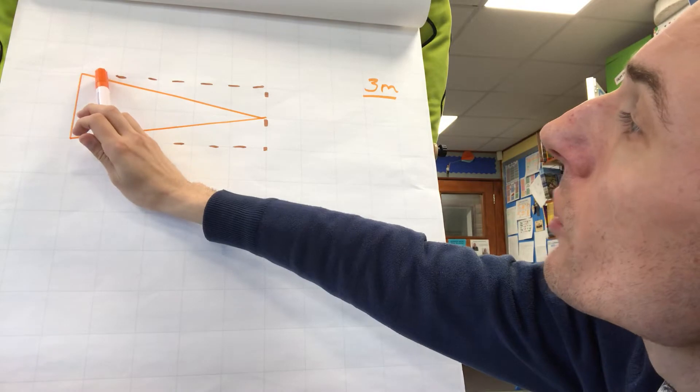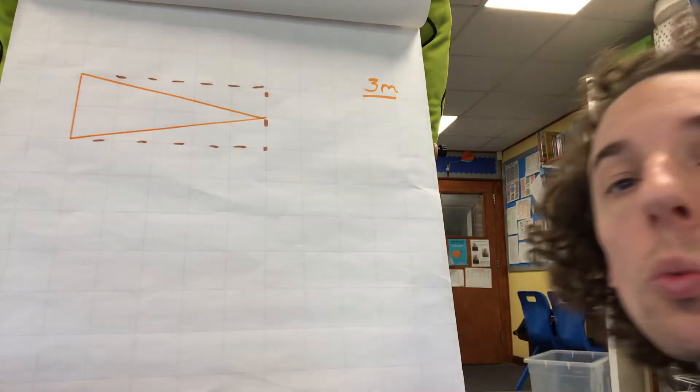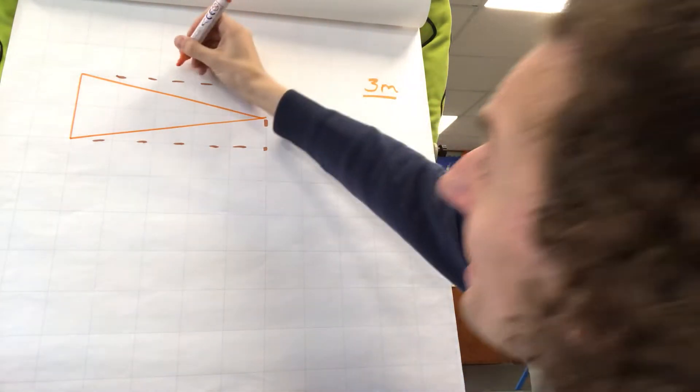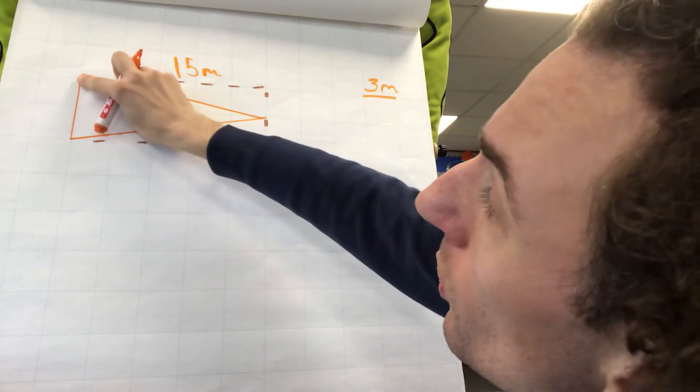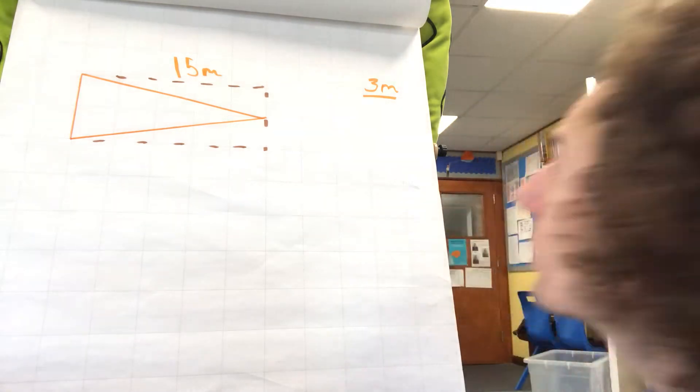which would be 15 metres. And then this would be 2 times 3, which would be 6 metres.